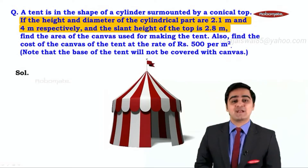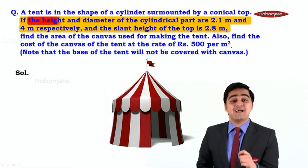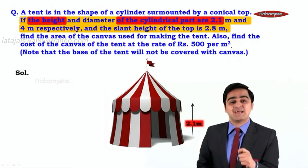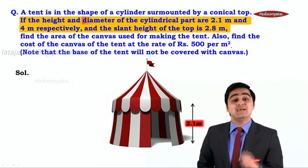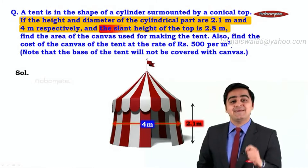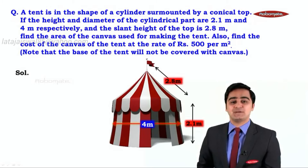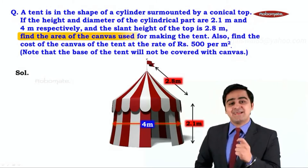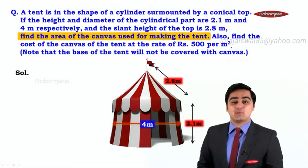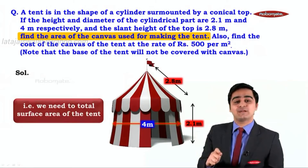They have provided us with the dimensions of some of the parts of the tent. The height of the cylindrical part is given as 2.1 meter. The diameter of the cylindrical part is given as 4 meter, and the slant height of the top of the cone is given as 2.8 meter. We need to find the area of the canvas used for making the tent — that is, the total surface area of the tent.